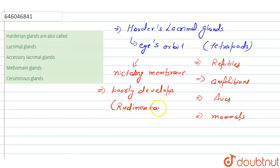So here the correct answer for our question is: these Harderian glands are also called the lacrimal glands. Talking about the rest of the options, accessory lacrimal glands - these are incorrect.